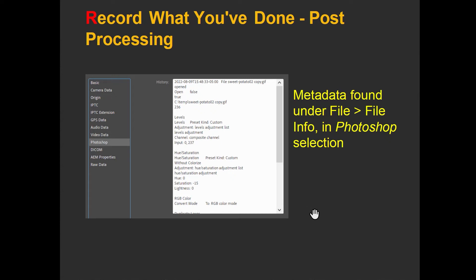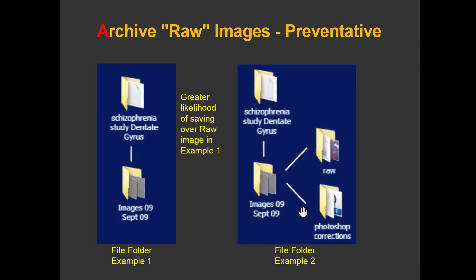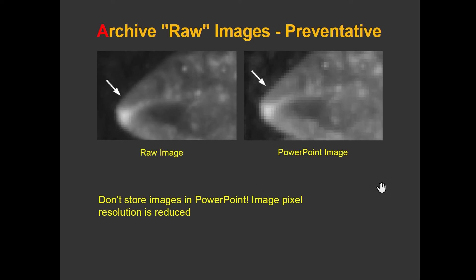You may lose that metadata if you save the image as a JPEG. In the scientific world, you must archive your raw images, your original images. Nowadays hard drives are so inexpensive and store such large volumes of information — it's best to save all your original images to two hard drives on a regular basis, the one on your computer and a backup. It's also important to create directories in such a way that you put all your raw images into their own folder, and then save your images as TIFFs for Photoshop corrections. Do not archive images in PowerPoint.